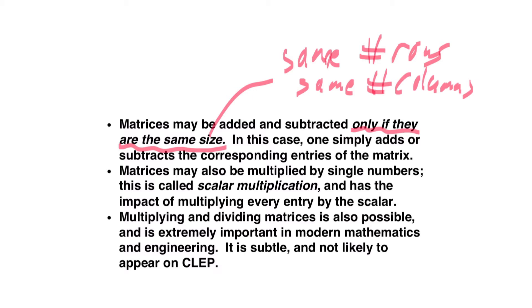You can also multiply matrices by single numbers, something called scalar multiplication. For example, I can multiply the number 2 by the matrix (1, 0, 0, 1).